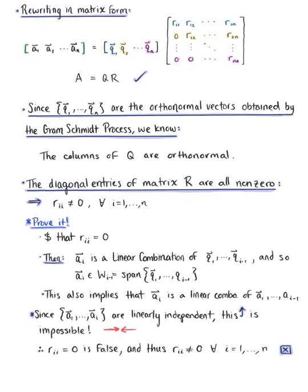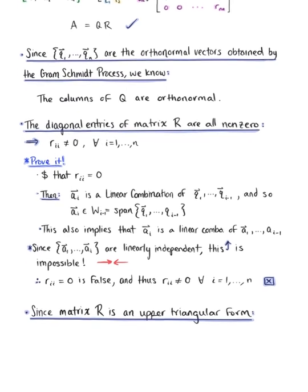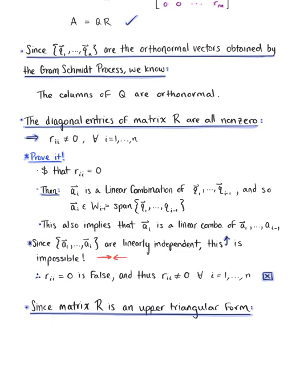The last observation is that since matrix R is in upper triangular form, then by a previously established theorem, matrix R is invertible. This officially completes our proof for the QR factorization of matrix A. We have fully verified that for an M by N matrix A with linearly independent columns, this matrix can be factored into the product of a matrix Q — an M by N matrix with orthonormal columns — and a matrix R that is an invertible upper triangular matrix. Let's continue our exploration of QR factorization by looking at some examples next time.